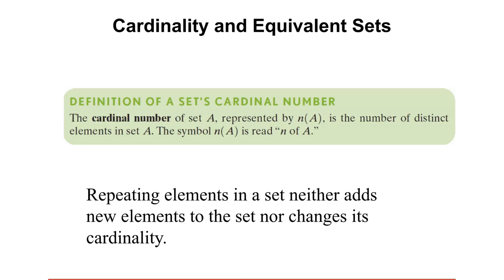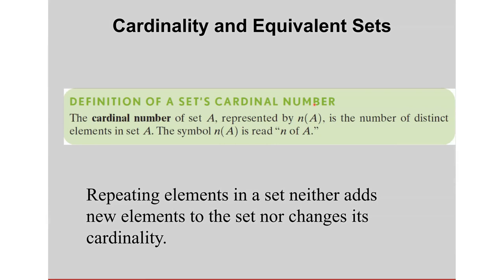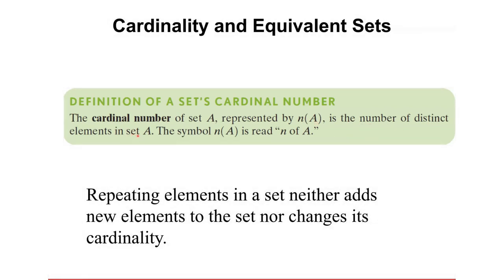Let's define the set's cardinal number. What do you mean by cardinal number? The cardinal number of set A is represented by N of A. This is what we use to denote the cardinality of A, or the cardinal number of A. The cardinal number of set A is the number of distinct elements in set A.